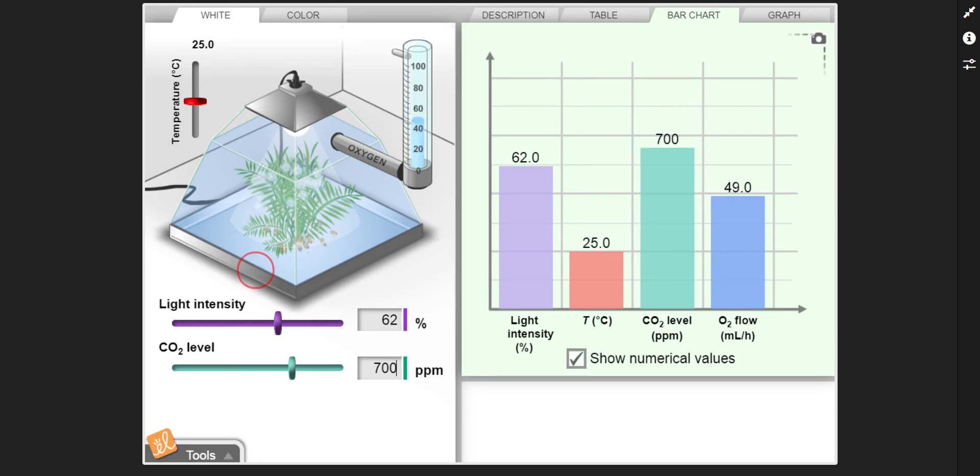Okay. Light intensity. Oh, did we get more? Yeah, we got a slight little bit more. So let's see if CO2 levels might change it. No, we never changed. So our limiting factor for this question is light intensity.